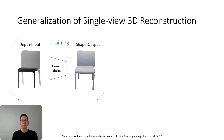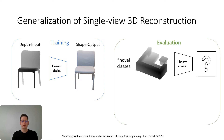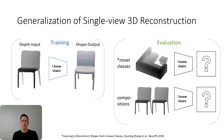Single-view 3D reconstruction is one extreme case of recovering the 3D shape of a single input image. In order to test the real reconstruction capabilities of neural networks, we train on a subset of ShapeNet shapes and evaluate on the left-out novel classes, as proposed by Genre by Zhang et al. Additionally, in this work we evaluate on compositions or new arrangements of shapes.